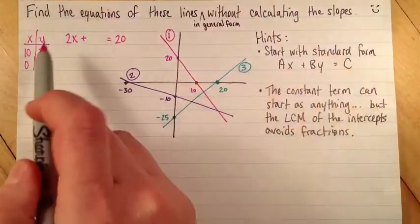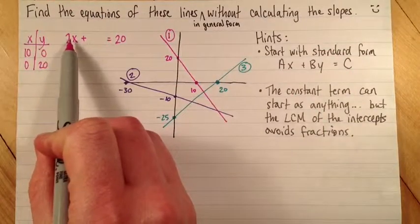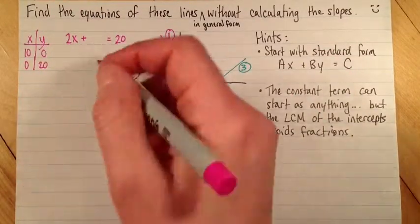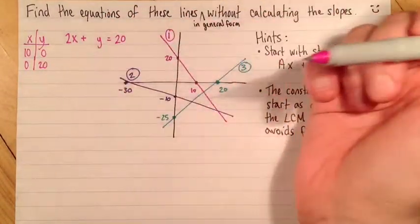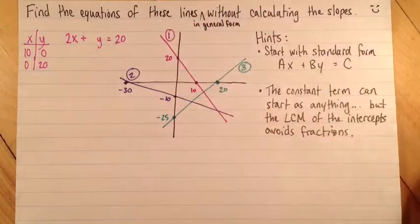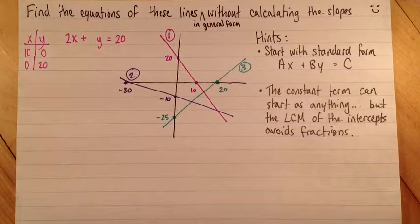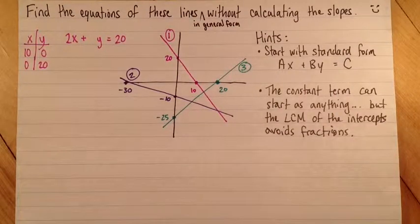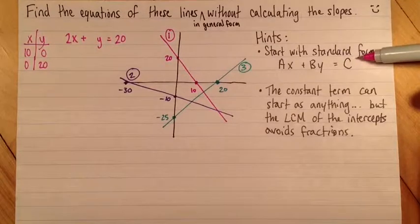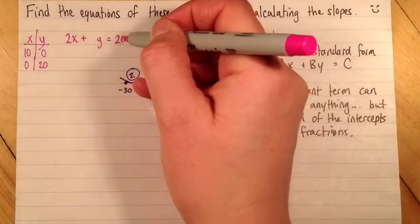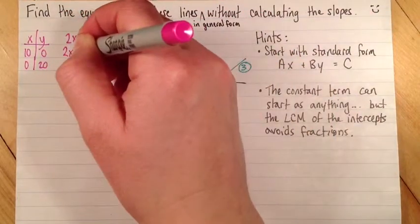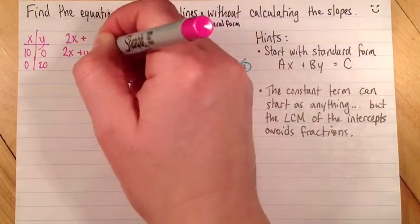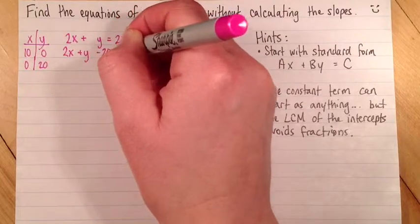Now I'll do the same thing, except I'll kind of ignore what the x term is and say, how many y's would I need to equal 20? In this case, it's just 1. You can write 1y if you want. So this is actually the equation. This is standard form. Then all we need to do to get general form is just subtract 20 from both sides. 2x plus y minus 20 equals 0.